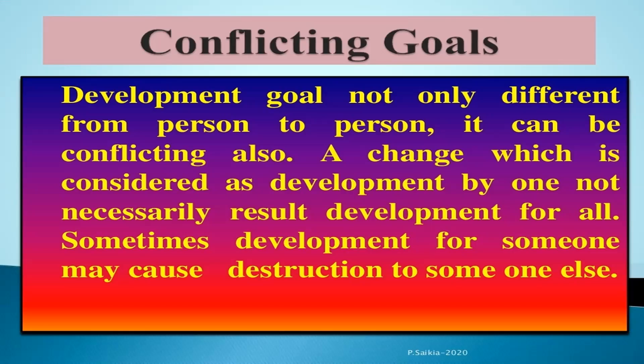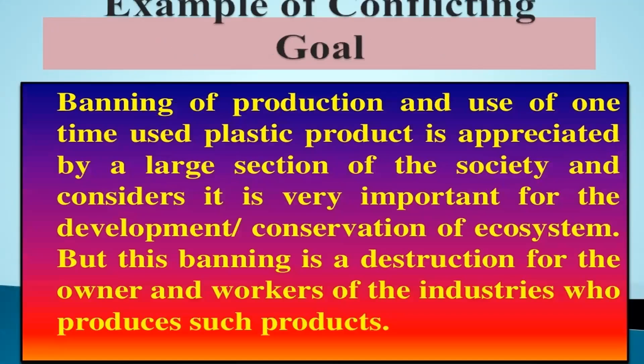Regarding conflicting goals: developmental goals not only differ from person to person, they can be conflicting. A change considered as development by one may not result in development for all — development for someone may cause destruction for another. For example, an industrialist wanting to build more dams may result in submergence of tribal land, leading to protest and resentment. Another example: banning single-use plastic products is appreciated by a larger section of society for conserving the ecosystem, but it is destructive for the owners and workers of industries that produce such products.